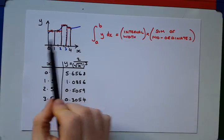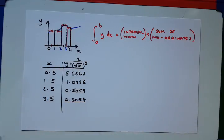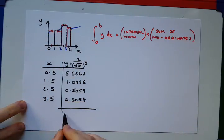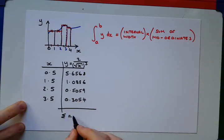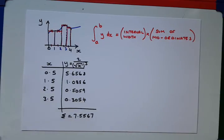So, we know our interval width is 1, and the next thing we need to multiply by is the sum of the mid-ordinates. So, if I sum these values of y, add the four values here together, I get 7.5567, when we add them together.